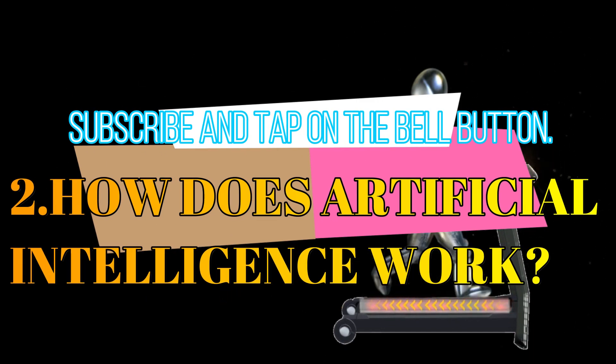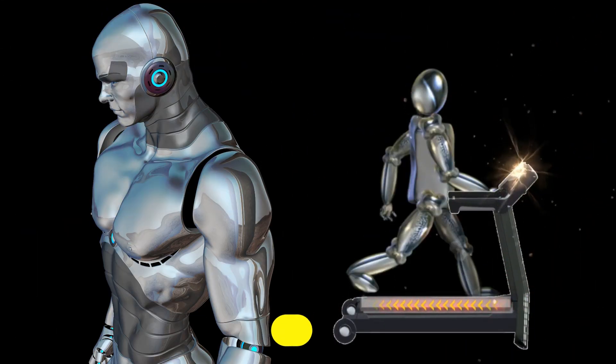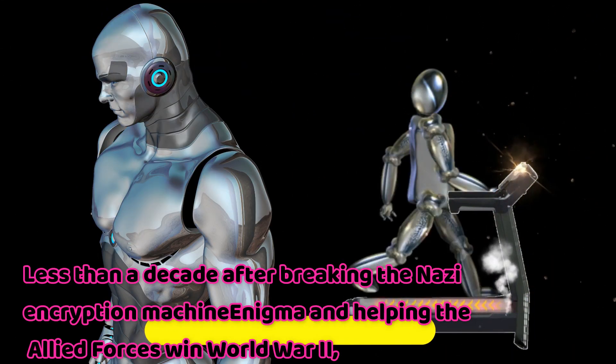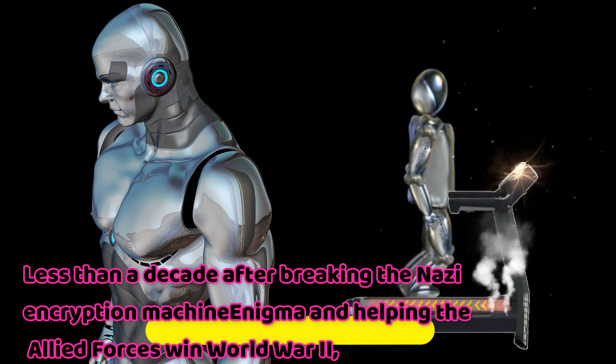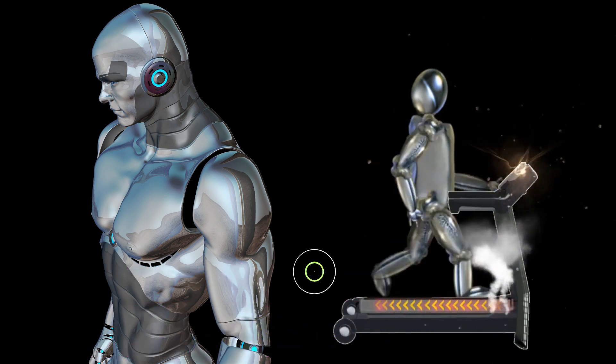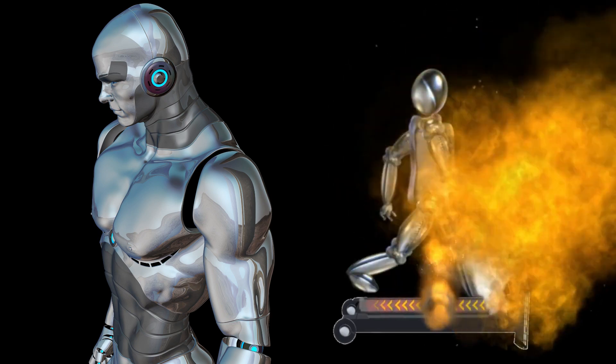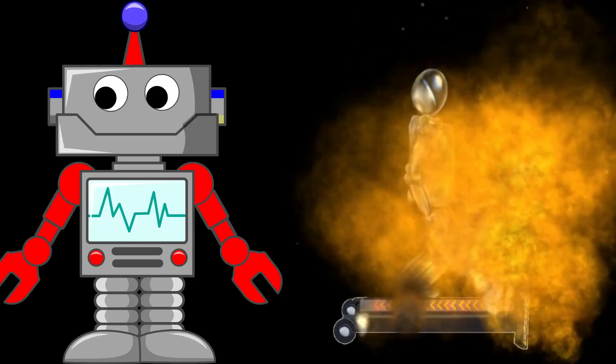How does Artificial Intelligence work? Less than a decade after breaking the Nazi encryption machine Enigma and helping the Allied forces win World War II, mathematician Alan Turing changed history a second time with a simple question: can machines think?